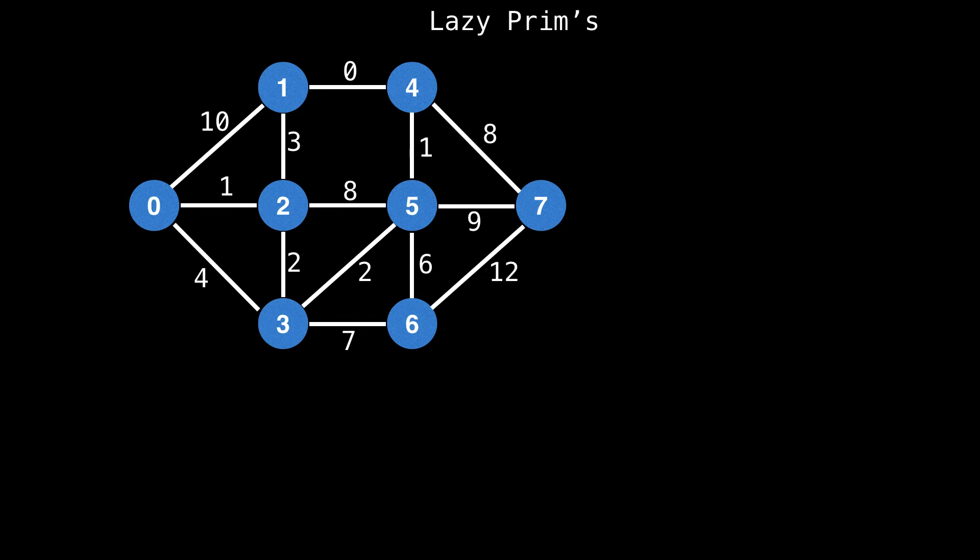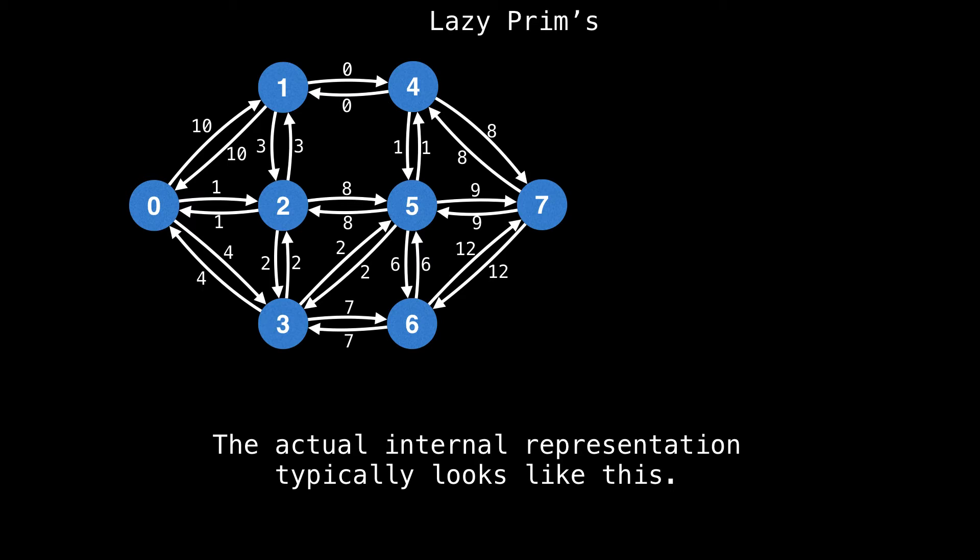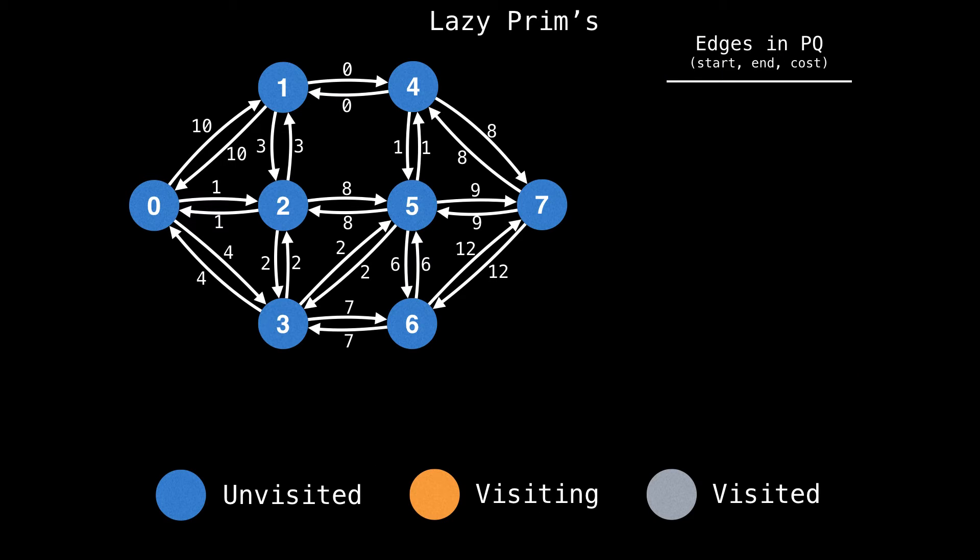Let's have a look at an example. Suppose we have this weighted undirected graph, and we want to find any minimum spanning tree. An important thing to keep in mind is that while the graph above represents an undirected graph, our internal adjacency list representation has each undirected edge stored as two directed edges. So the actual internal representation typically looks something like this, which is a lot easier to work with. Along with the graph, I will also be keeping track of the edges currently in the priority queue on the right. I will be representing edges as triplets containing the start node of the edge, the end node of the edge, and the edge cost. Lastly, I will be coloring nodes as either blue for unvisited, orange for visiting, or gray for visited.